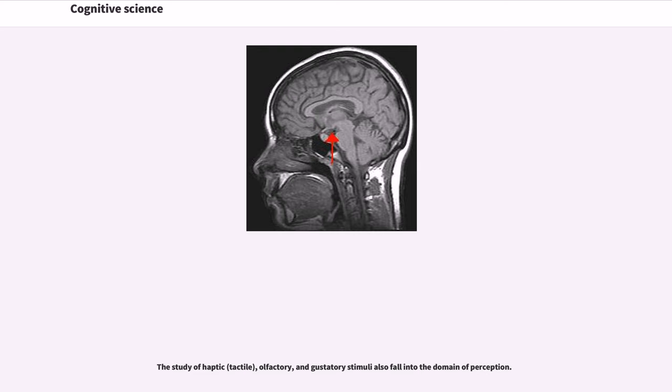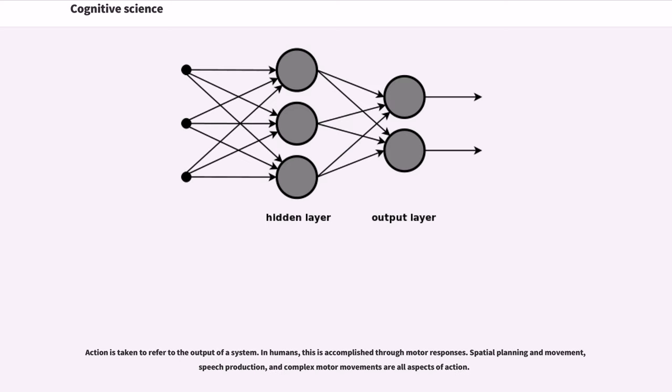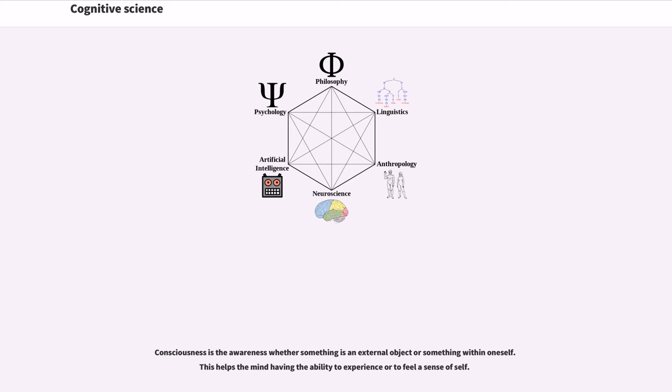Action is taken to refer to the output of a system. In humans, this is accomplished through motor responses. Spatial planning and movement, speech production, and complex motor movements are all aspects of action. Consciousness is the awareness whether something is an external object or something within oneself. This helps the mind having the ability to experience or to feel a sense of self.